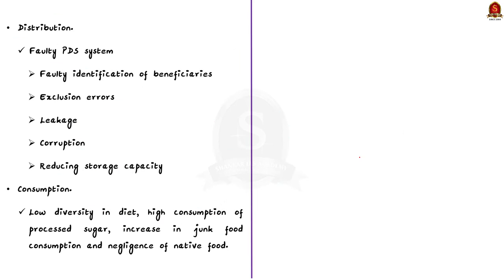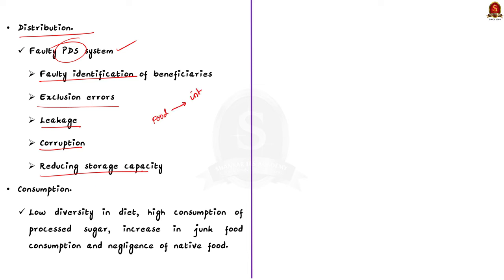On the distribution side, India's PDS system faces challenges like faulty identification of beneficiaries resulting in exclusion errors, leakage, corruption, and reducing storage capacity. Due to this, food does not reach intended beneficiaries even when there is excess food production. Finally, on the consumption side, there is low diversity in diet, high consumption of processed sugar, increase in junk food consumption, and neglect of native foods — all leading to hidden hunger.